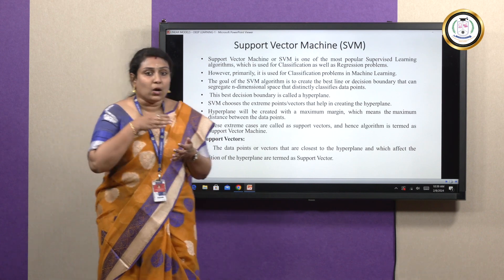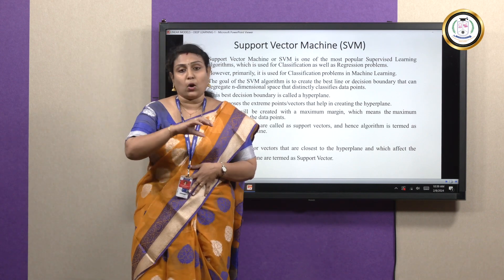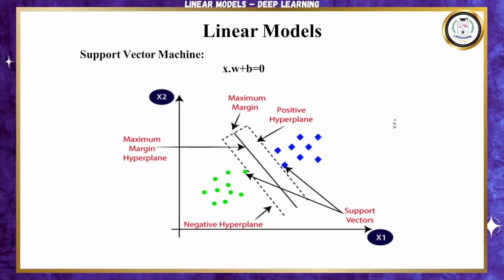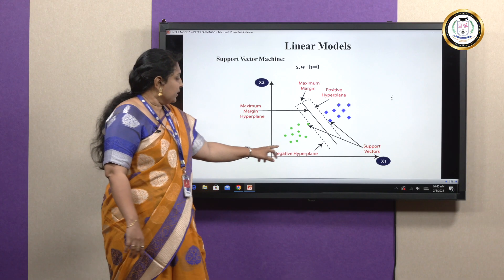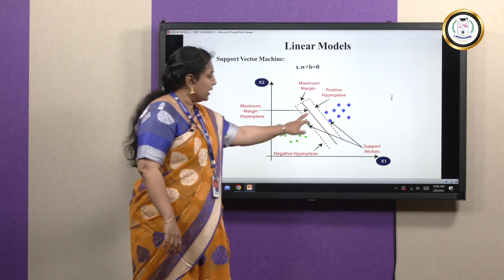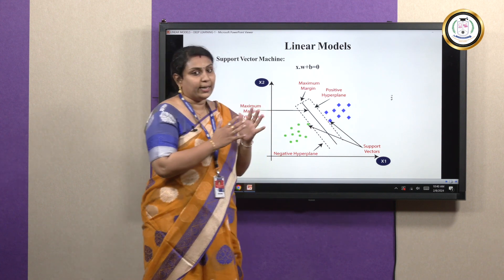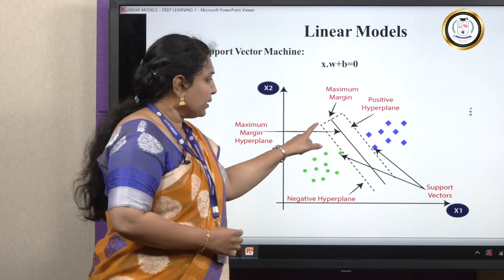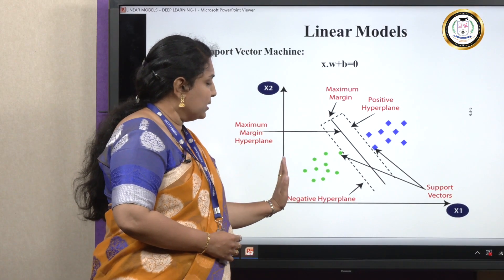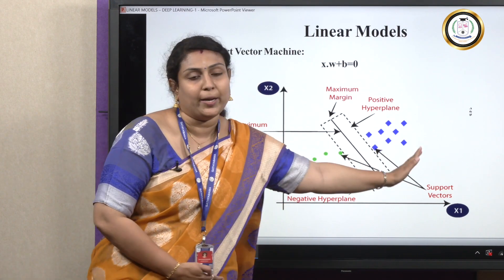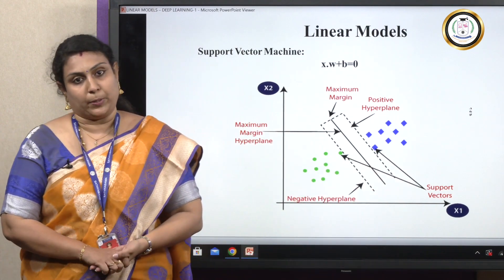The hyperplane is created with maximum margins, meaning the maximum distance between the margin and the data points. The data points along with the hyperplane — along with the margin — are called support vectors. In this diagram representing SVM, you can see the hyperplane which classifies class A and class B data. This is the maximum margin; this side is called the negative hyperplane and this will be the positive hyperplane.